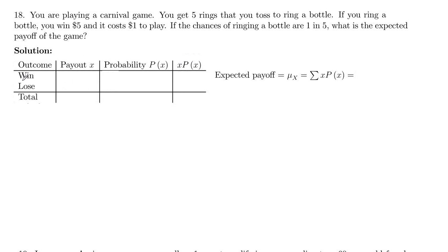If we win the game, then our payout is five dollars, but it costs a dollar to play, so your net payout is actually four. You've got a five dollar payout minus one dollar to play, which is four dollars. Now if you lose, you win nothing but it costs you a dollar to play, so that's a payout of negative one dollar.